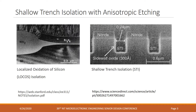One way that this will move our devices forward is by allowing us to move from a localized oxidation method of isolation known as LOCOS over to shallow trench isolation. In LOCOS, the field pushes into the active region, leading to a less dense final chip. Shallow trench isolation allows for smaller isolation features while also allowing for an abrupt shift from the field region to the active regions of the devices.